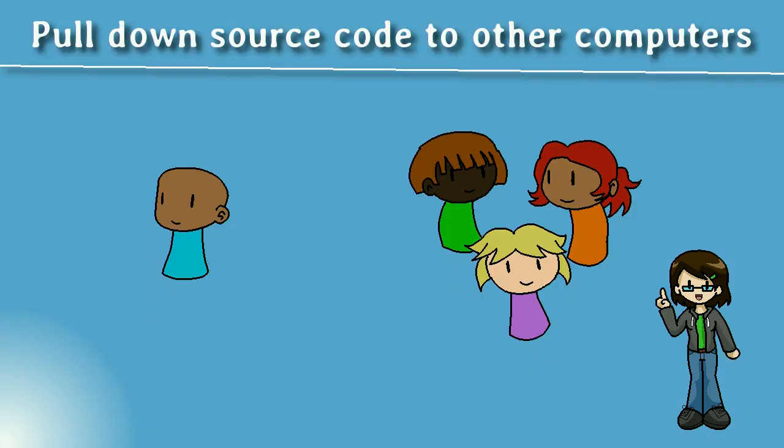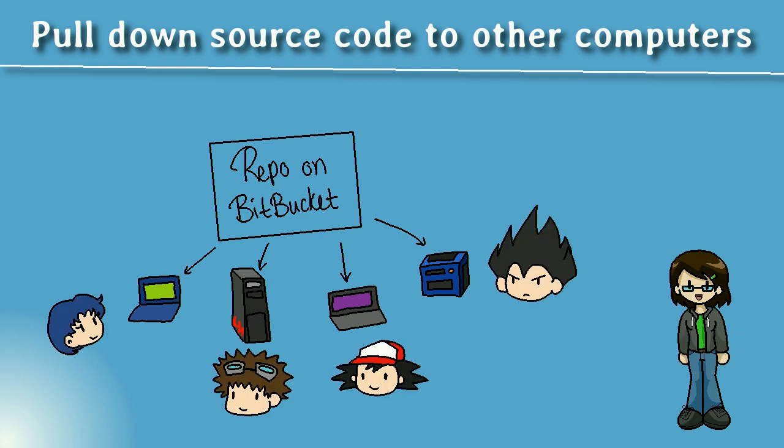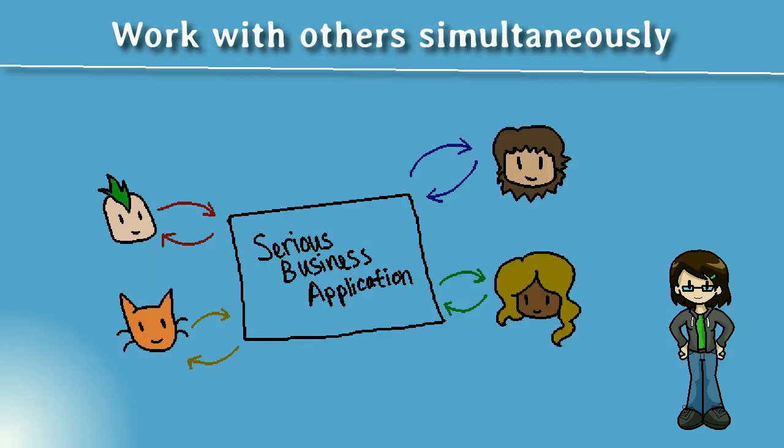Whether you're working alone or in a team, source control is handy because it stores the source code on a server. You can access your repository from other locations and pull down your source code, so you can continue editing elsewhere. If someone is given permission to access your repository, they can also pull down your source files and work on it with you. Source control is a must-have tool, whether you're working solo or with a team.